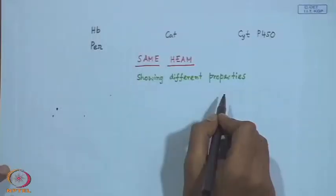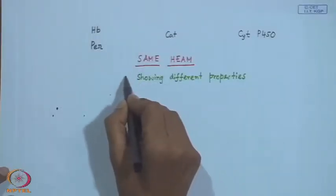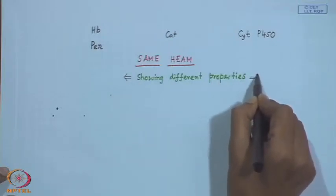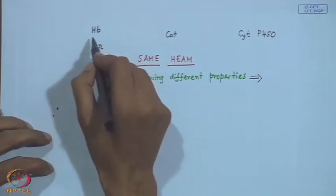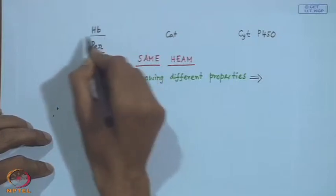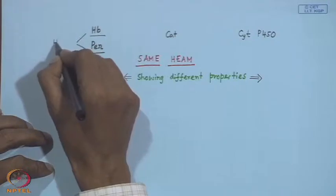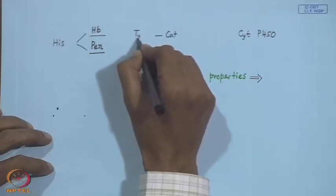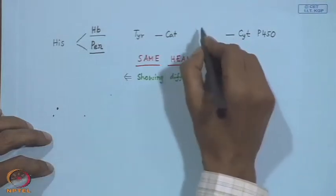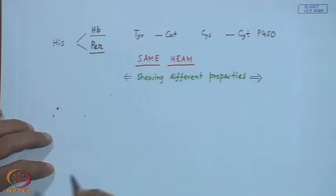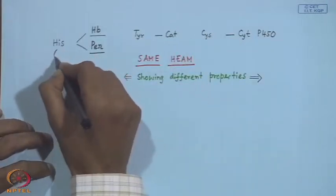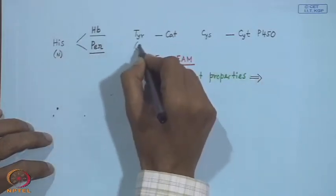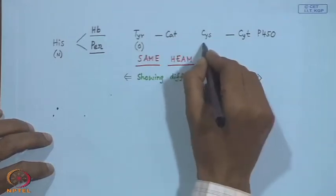We are talking about the same heme molecule which is showing different properties. Why they are showing these different properties — before going to the dioxygenase system, we should remember that in both hemoglobin and peroxidase, it is the fifth coordination site which is bis-histidine. For catalase it is tyrosine, and for cytochrome P450 it is cysteine. So you have the sulphur, you have the oxygen, and here you have the nitrogen coordination.